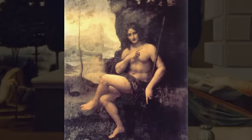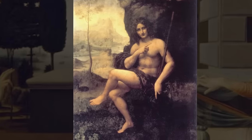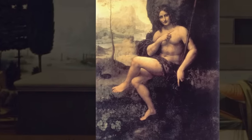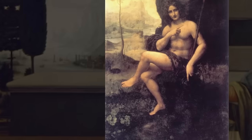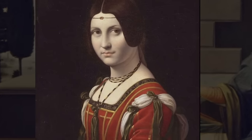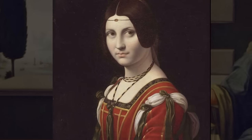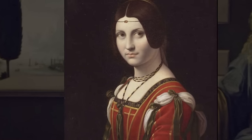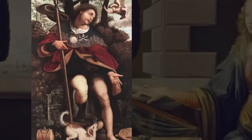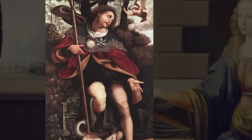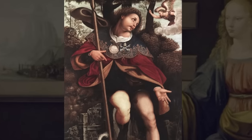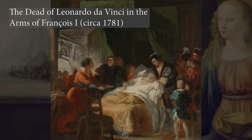Leonardo was educated in Florence by the Italian painter and sculptor Andrea del Verrocchio. He began his career in Florence, but later spent much of his time in the service of Ludovico Sforza in Milan. Later, he worked in Florence and Milan again, as well as briefly in Rome, all the while attracting a large following of imitators and students. Upon the invitation of King Francis I, he spent his last three years in France and died there in 1519.